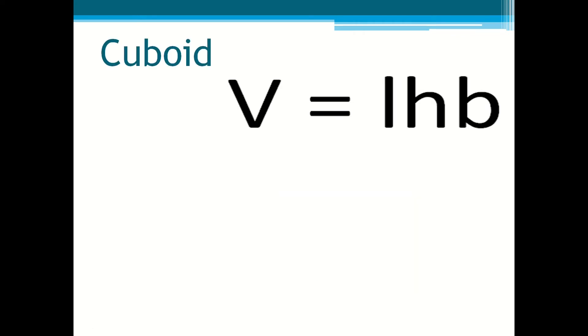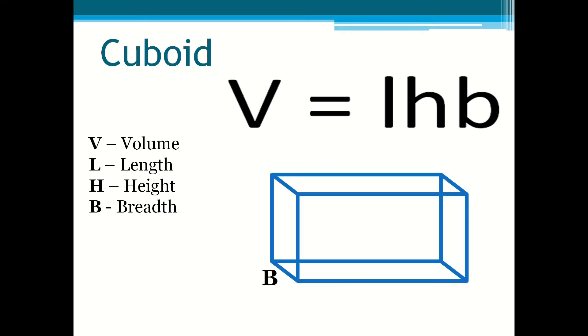Cuboid. Volume equals length times height times breadth. V is equal to volume, L is equal to length, H is equal to height and B is equal to breadth which is seen in the diagram.